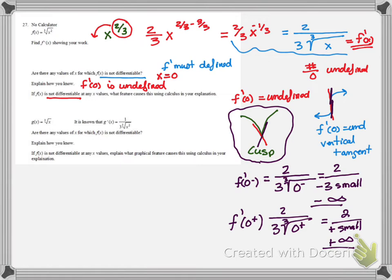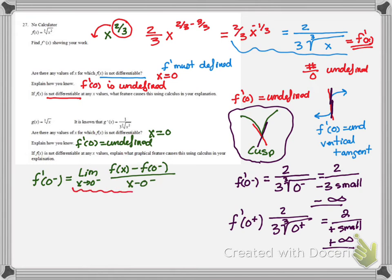And so the next part of this problem is very similar. We are, again, not differentiable at x equals 0. The reason is because f prime of 0 is undefined. So we're going to take a look now at the derivative of 0 from the left side. And you'll notice this time I wrote it as a limit statement.